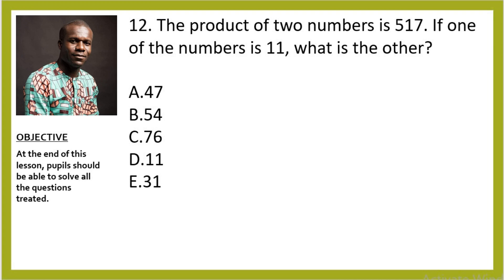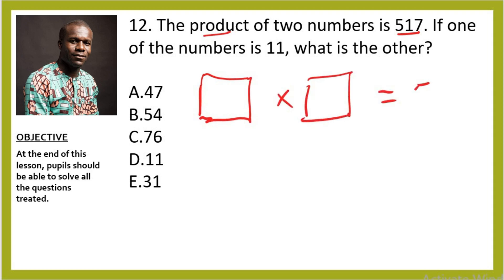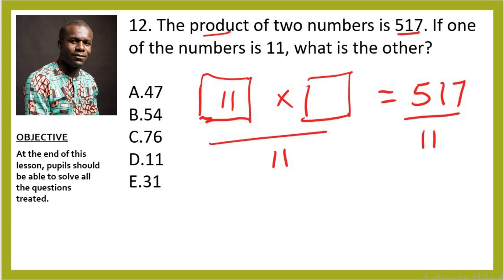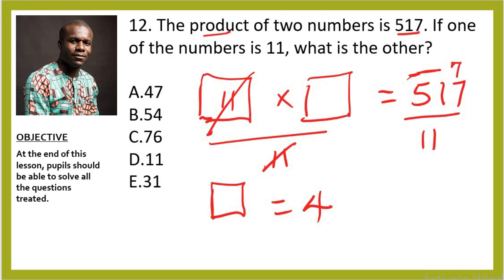Question 12: The product of two numbers is 517. If one of the numbers is 11, what is the other? Product means multiplication, so the two numbers multiplied equal 517. To find the missing number, divide both sides by 11: 517 ÷ 11. 51 ÷ 11 = 4 remainder 7; 77 ÷ 11 = 7. So the missing number is 47, which is option A.